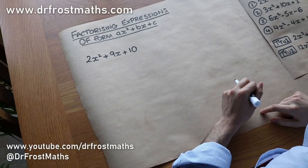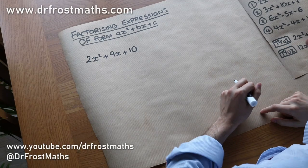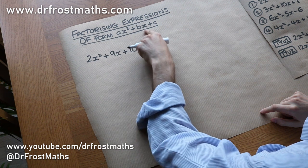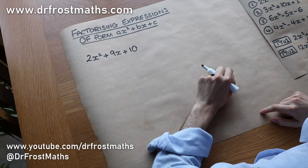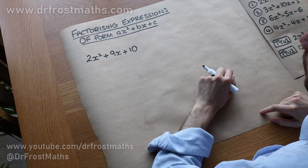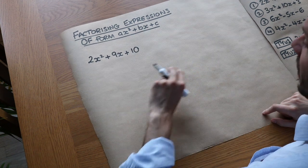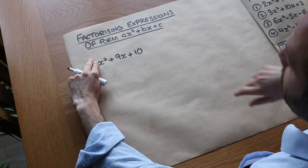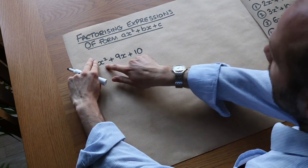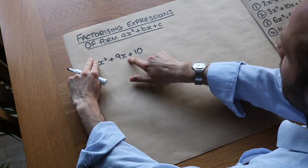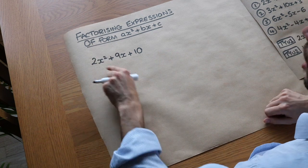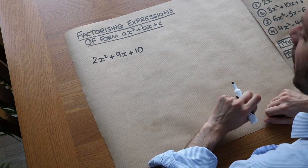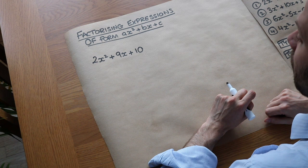Hello and welcome to this video on factorising expressions of the form AX squared plus BX plus C. In the previous video we saw quadratics where we didn't have a number on the front of the X squared, so we might factorise X squared plus something X plus something. It makes it harder when you have that number in front of the X squared, so we have to use a different method.